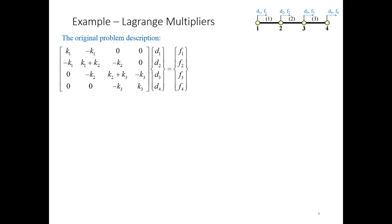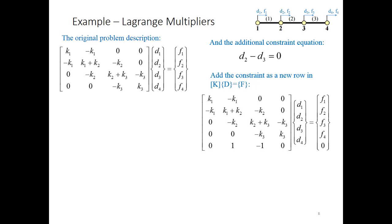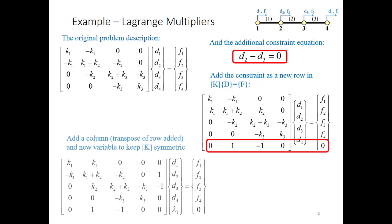So for the same example problem we had previously, where we want to link or tie nodes 2 and 3, this is our original system matrix, and we're adding an additional constraint equation. So the constraint equation you want to write with your degrees of freedom all on the left side and forces on the right side in order to use this. So we're going to add this equation as a new row in our KD equals F. This now becomes an unsymmetric matrix equation. So now we add a transpose of that row as our final column. That makes our matrix symmetric again, and it's now become, instead of a 4x4 matrix, it's a 5x5, and we've introduced a new variable, lambda1.